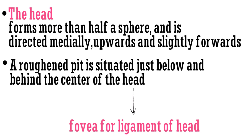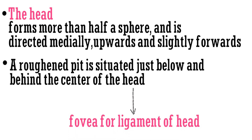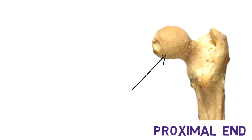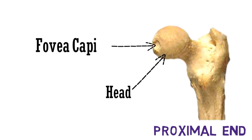Let's have a look at these parts. This is the proximal end of the femur bone. This sphere which you can see is the head of femur, and this pit is the fovea capitis, or the fovea for ligament of head.